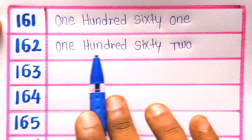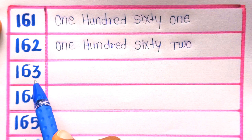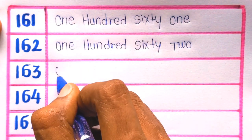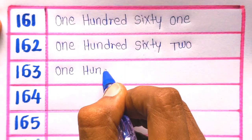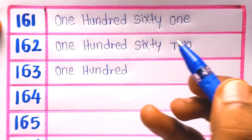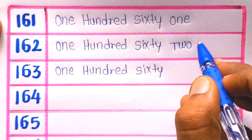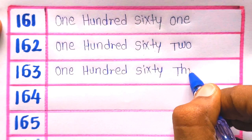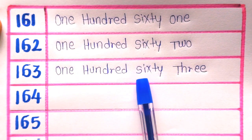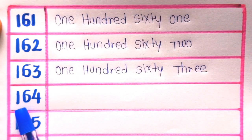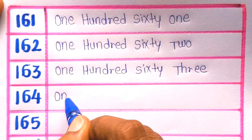Next is 163: O-N-E, ONE, H-U-N-D-R-E-D, HUNDRED, S-I-X-T-Y, SIXTY, T-H-R-E-E, THREE. 163. Next is 164: O-N-E, ONE.